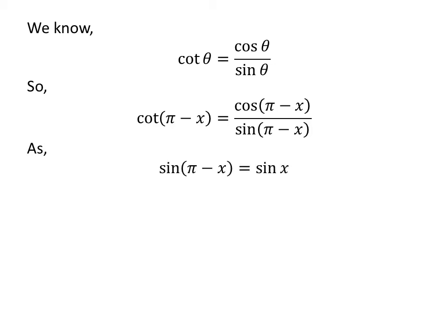As we know, the trigonometric identity sine of pi minus x equals sine of x. The proof of this identity has been explained in the video appearing in the upper right corner. The link of the video has also been mentioned in the description section.